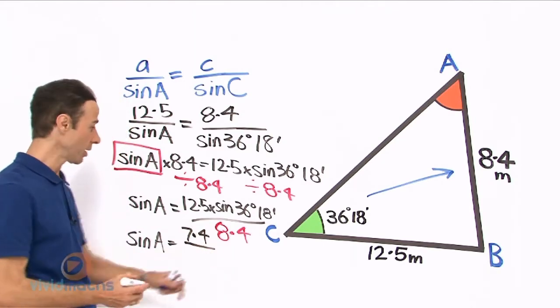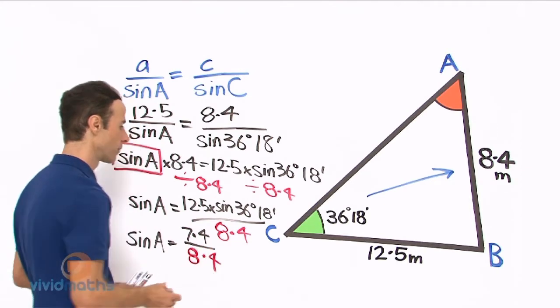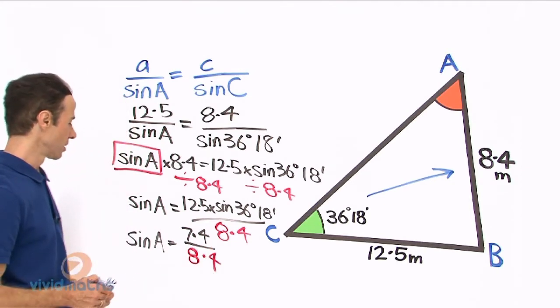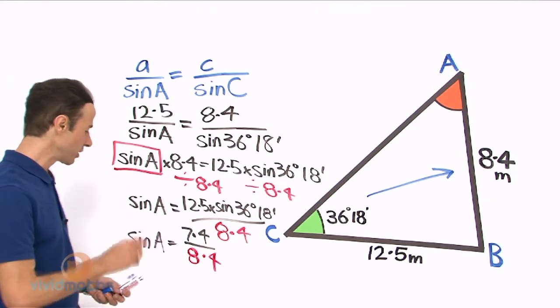So 7.4 divided by 8.4 on your calculator, when we divide that, that is going to give us a sine of 0.8097.